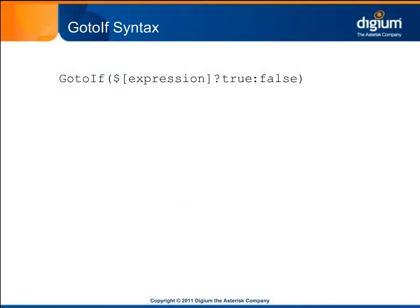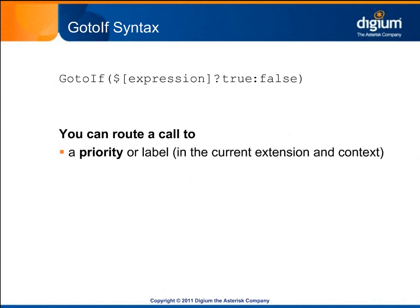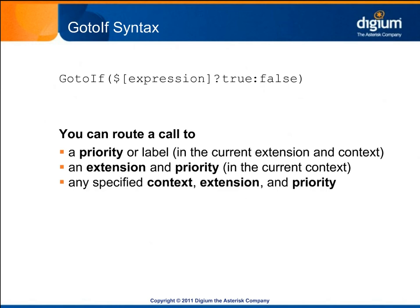GoToIf and other conditional applications can take up to three arguments. The first argument is the expression to be evaluated. The second argument is the dial plan location to go to if the expression evaluates to true. The third argument is the dial plan location to go to if the expression evaluates to false. Dial plan locations are specified in the same format as used by the GoTo application. You can route a call to a priority label in the current extension and context, an extension and priority in the current context, or to any specified context, extension, and priority.